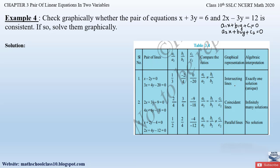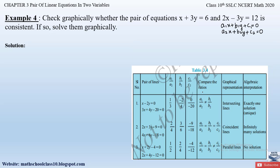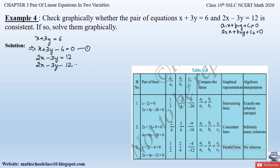The given equations are x + 3y = 6, which can be rewritten as x + 3y − 6 = 0 (Equation 1), and 2x − 3y = 12, which becomes 2x − 3y − 12 = 0 (Equation 2).